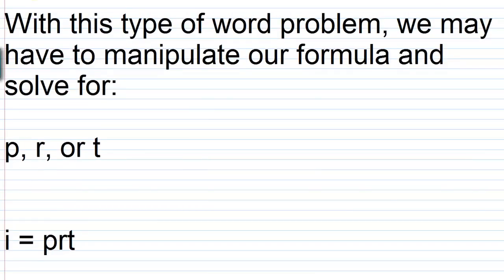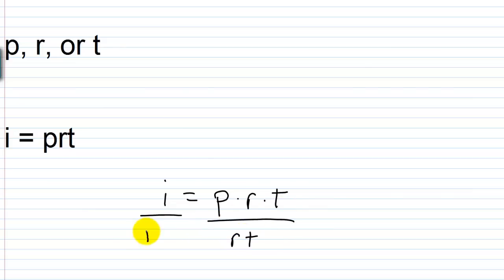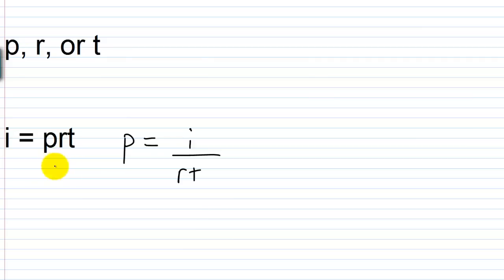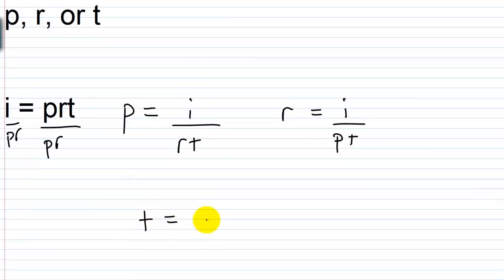With this type of word problem we may have to manipulate our formula and solve for p, r, or t. Starting from i equals p times r times t: to solve for p, treat r times t as the coefficient and divide both sides by r times t, giving p equals i over r times t. To solve for r, divide both sides by p times t, giving r equals i over p times t. To solve for t, divide both sides by p times r, giving t equals i over p times r.